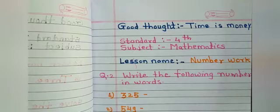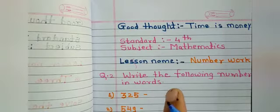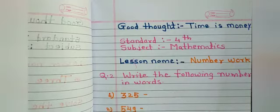In the previous lecture, we learnt to make three-digit numbers and read them. Today we are going to learn to write numbers in words. Question number two: write the following numbers in words.